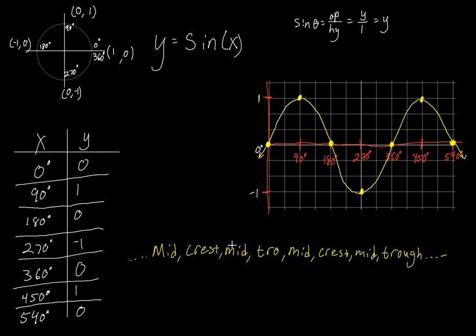So this is the parent function for sine. The key thing to take away is it starts at the midline, goes up to the crest, back to the midline, then trough, back to the midline. These five points are what I call the critical points on the graph. Right now that may not mean much, but if you take calculus, critical points are very important there too. The main thing to pull away: the sine parent function starts at the midline and goes up to the crest first.